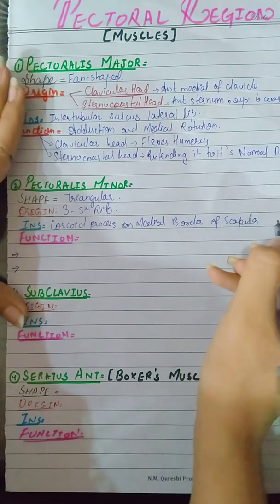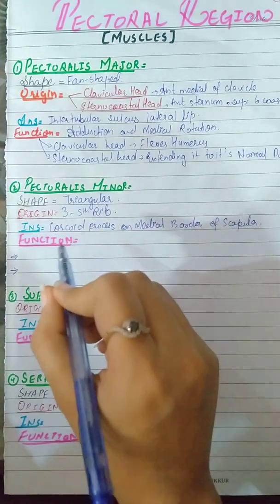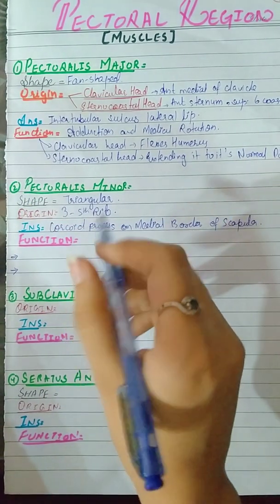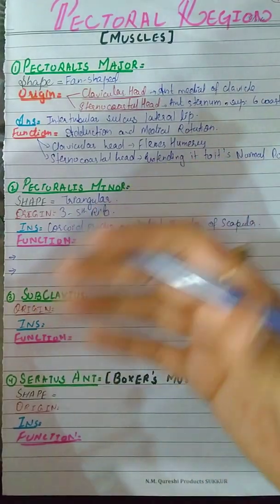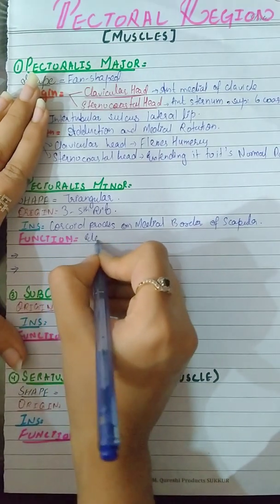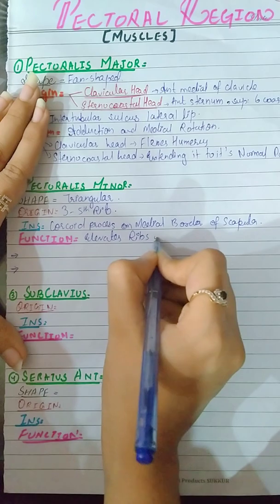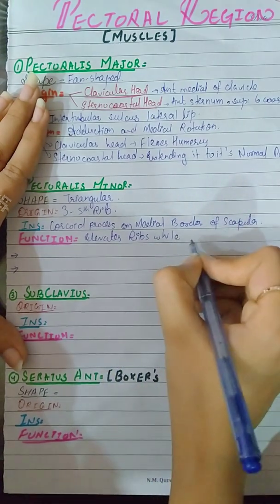Then we have its function. When we take a deep breath, the pectoralis minor helps us by elevating the ribs during deep inspiration.